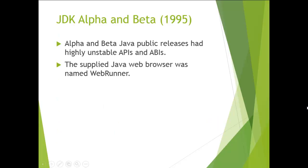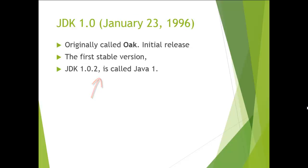The initial version is Java Development Kit Alpha and Beta, released in 1995. These are just the first releases of Java, so they had highly unstable APIs and ABIs. Java also supplied a web browser named WebRunner which supported Java.